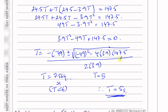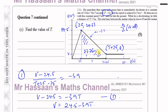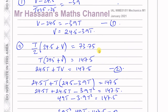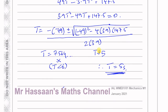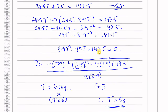So T equals 5 seconds — that's the time for which the parachutist was decelerating. This means the time on the graph becomes 7.5 seconds. That's the answer to part C.